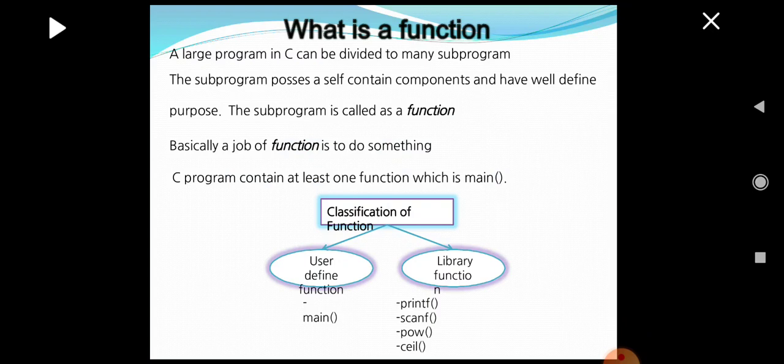The two main broad categories of function are user-defined function and library function. User-defined functions are defined by the user or the programmer. The best example of a user-defined function is the main function, which is present in all C programs. Library functions are predefined functions already defined in the libraries and available in the header files. Examples of library functions include printf, scanf, and pow.